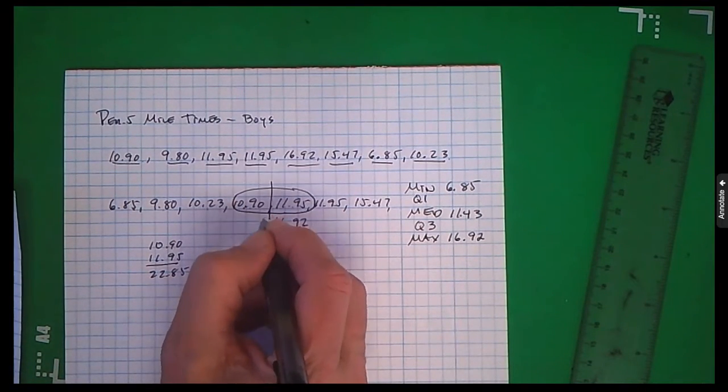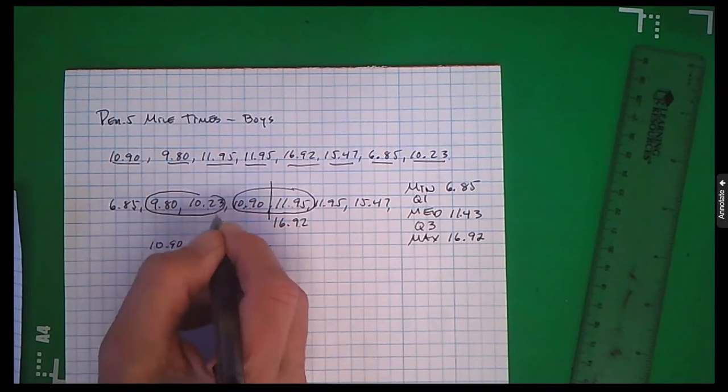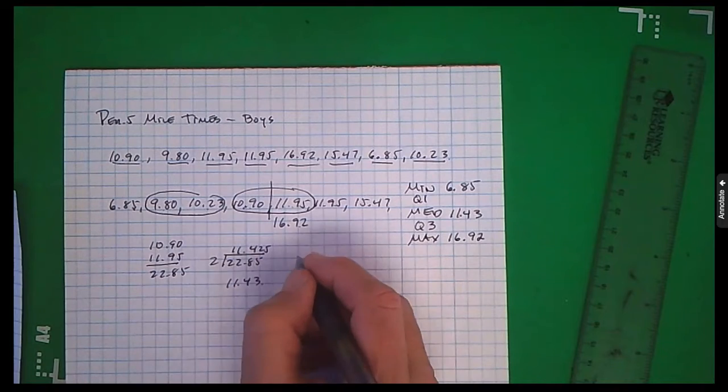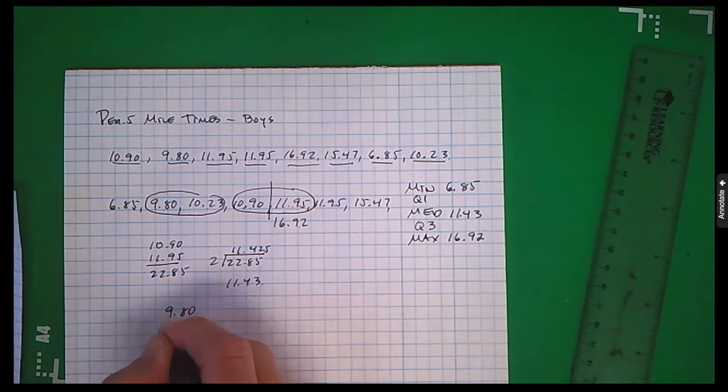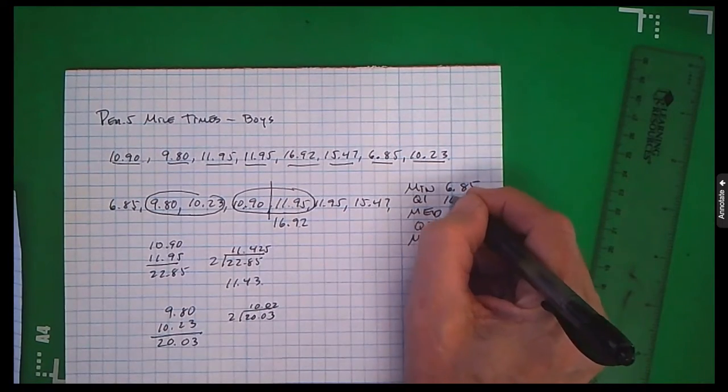I'm looking below the median for my first quartile. I see there's two numbers in the middle here. I'm going to add them. Divide by two. And if we round it off.